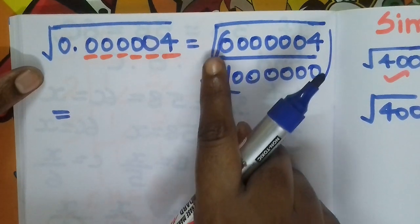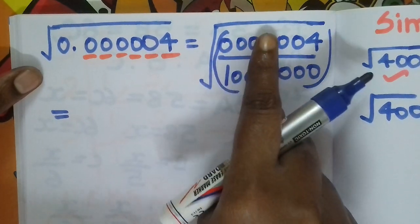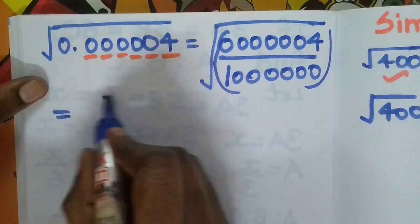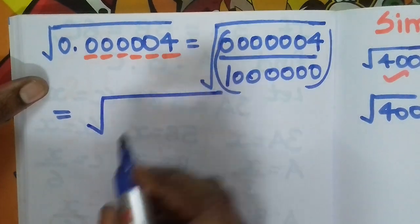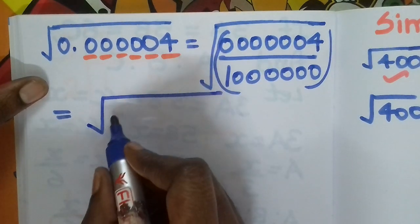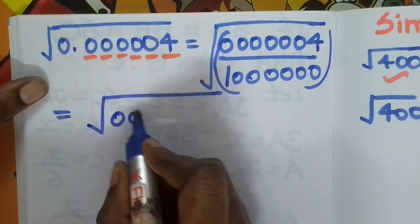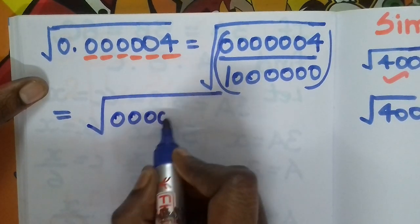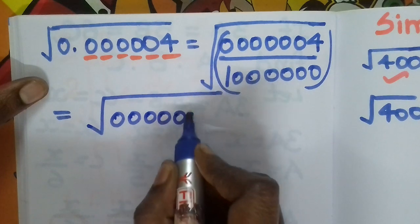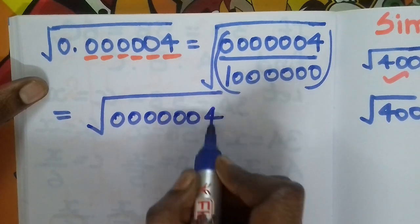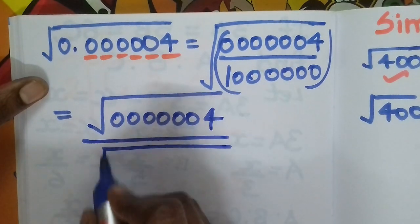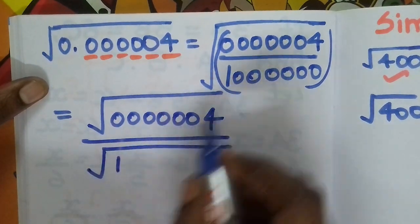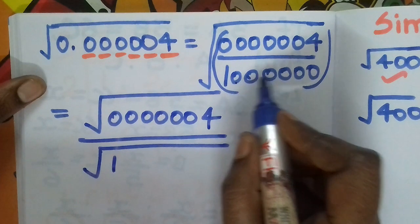The root is applicable for both numerator as well as denominator. So we get root of 4 divided by root of 1,000,000 — that is 1 followed by 6 zeros.